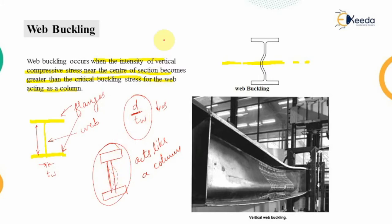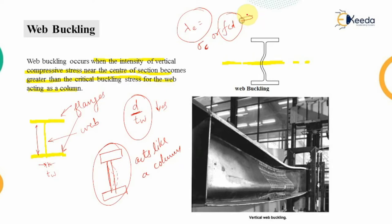As studied in compression members, every member is designed according to the slenderness ratio. The slenderness ratio is calculated, and based on that, the allowable compressive stress — denoted sigma_c or FCD — is found. Based on this FCD, the load carrying capacity of the section is calculated and compared with the external load. If the capacity is less than the external load, we need to revise the section or redistribute the area so that the design capacity PD becomes greater than P, eliminating the web buckling phenomenon.